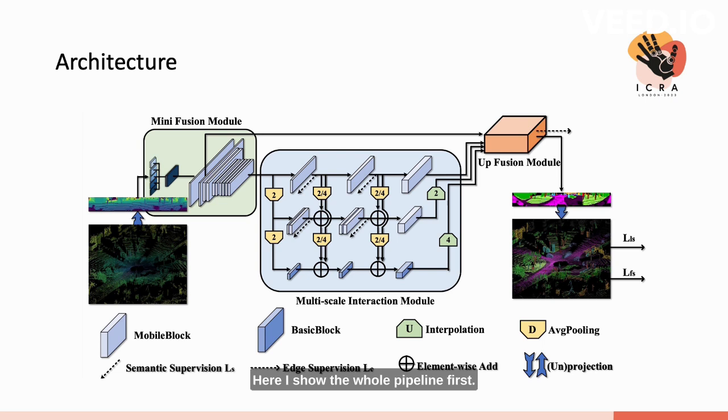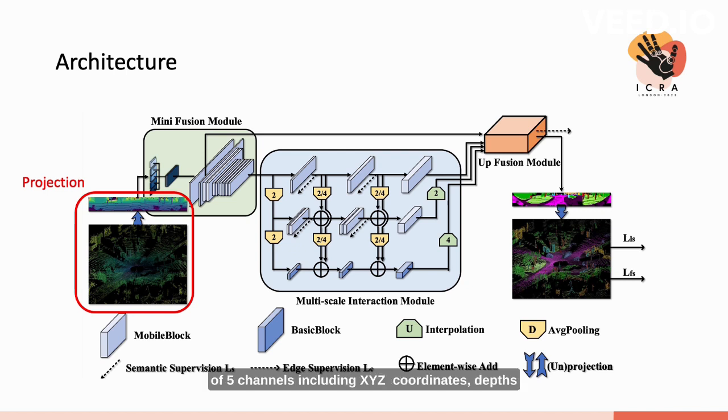Here, I show the whole pipeline first. The input 3D LIDAR scan will first be converted into a 2D projection map by spherical projection. In our work, the 2D projection map consists of five channels, including XYZ coordinates, depth, and the remission of the corresponding 3D points.